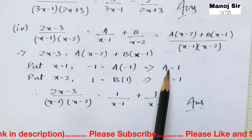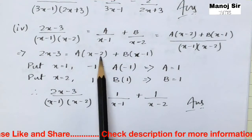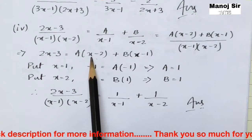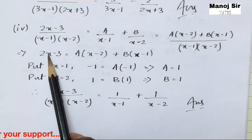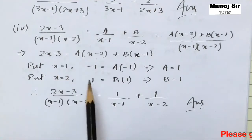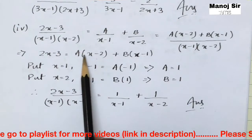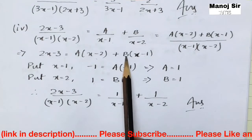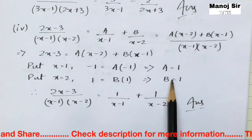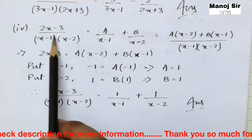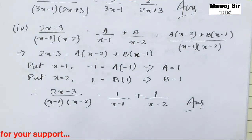To find B, put x = 2 so that the A term vanishes. Then 2(2)−3 = 1 = B(2−1) = B(1), giving B = 1. So A = 1 and B = 1. Therefore: (2x−3)/((x−1)(x−2)) = 1/(x−1) + 1/(x−2). This is the final answer for Example 4.